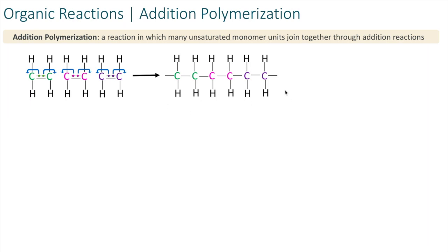And this is an example of an addition polymerization reaction. And again, we can just take that repeating unit right there and put an N to indicate that this is a polymer.